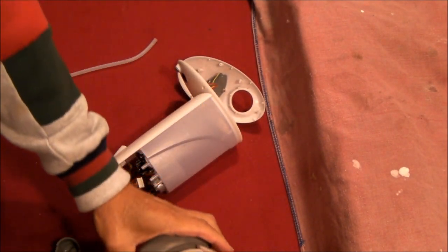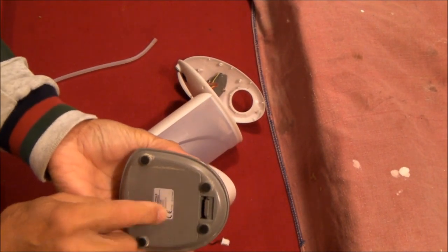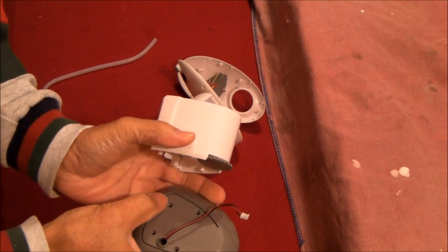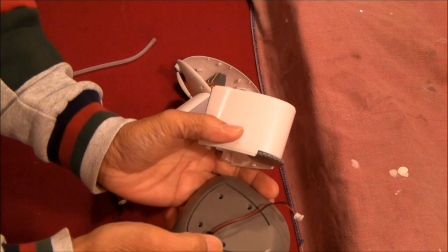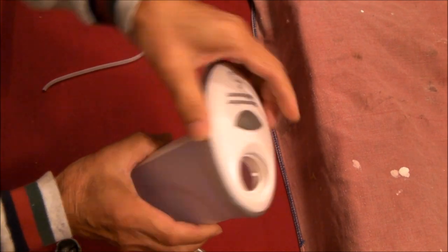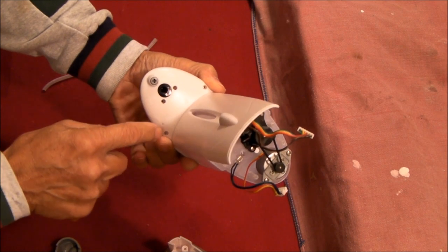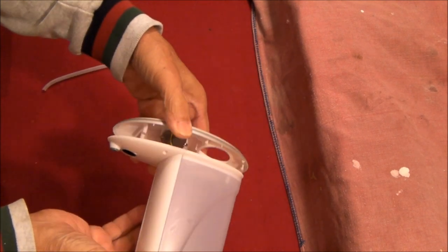Taking it apart comes apart really easily. Open the battery compartment up. There are four screws that come up right through here. The top comes apart by removing these four screws and prying this open.